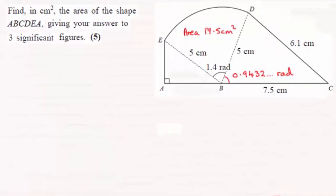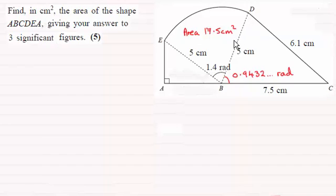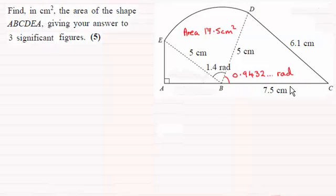Hi there. In this last part of the question we're asked to work out the area of this whole shape. I've put in the area of sector BDE which we worked out in an earlier part — it was 17.5 centimetre squared. Another part asked us to work out angle DBC, which is 0.9432 radians. If you'd like to have a go at finding the area of the shape, pause the video now; when you come back you can compare your solution with mine.